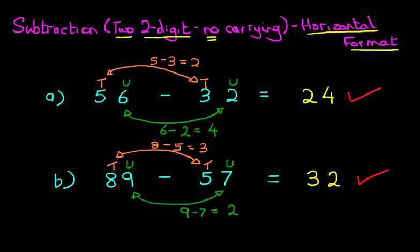Now all the arrows I have drawn and the workings, in time, you will be able to look at the two numbers, 89 minus 57, and go straight to the answer 32. But the only way you can do that is with practice.